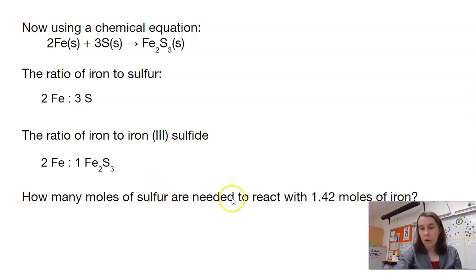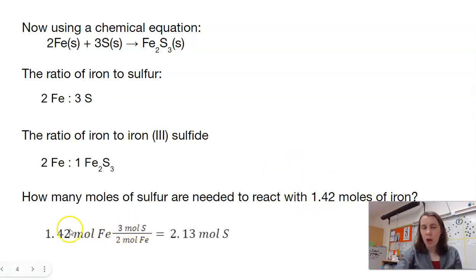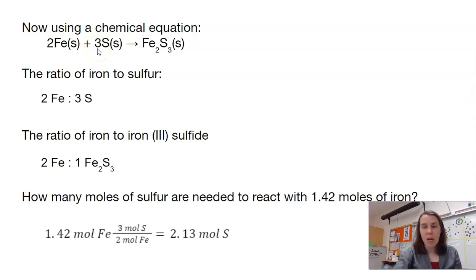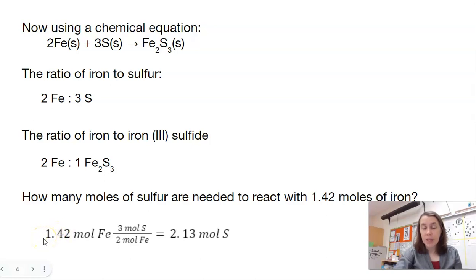We can use that information to solve problems going from one kind of chemical — in this case moles of iron — to a different one, asking for moles of sulfur. Just like the dimensional analysis problems we did before, the 1.42 moles of iron goes in the front. In our conversion factor, we want moles of iron in the bottom and moles of sulfur in the top. When doing a mole-to-mole ratio, the numbers we use are the coefficients from our balanced equation — not the subscripts, the big numbers in front. So 1.42 times 3, divided by 2.